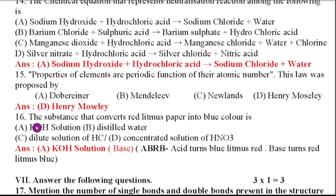Sixteenth question, the substance that converts red litmus paper into blue litmus paper. Options are KOH solution, distilled water, dilute solution of HCl and concentrated solution of HNO3. So they are asking what red litmus paper turns to blue. Red going to turn blue means that is 100% base only. So in the fourth option, KOH, potassium hydroxide is the base. So the option A is the KOH, potassium hydroxide because it is the base.